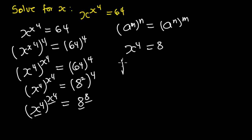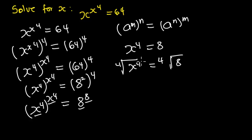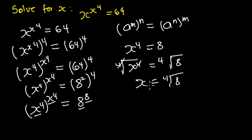Taking the fourth root of x^4 equals the fourth root of 8. The fourth root cancels with the fourth power, giving us x equal to the fourth root of 8. Therefore x = ⁴√8 is the value of x that satisfies this equation.